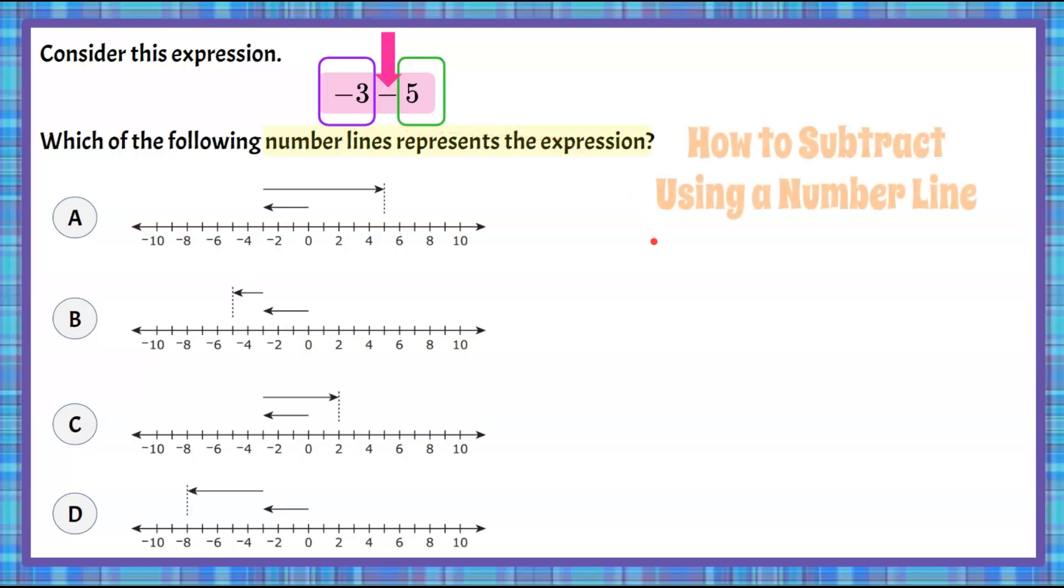So let's go over some steps to learn how to subtract using a number line. Three easy steps. Step 1. We're always going to start at 0 on our number line. So let's identify 0 on each of our number lines, in each of our four answer choices.